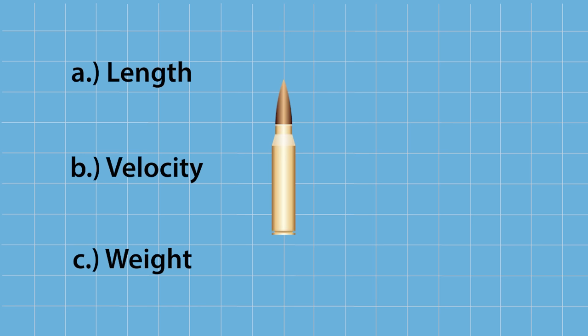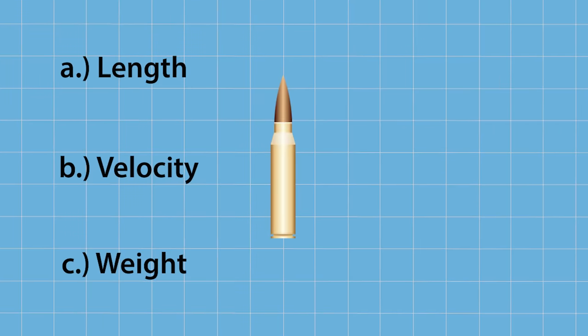Speaking of high-powered, what factor do you think contributes to making a bullet more damaging to the human body? Its length, its velocity, or its weight? The answer is velocity.